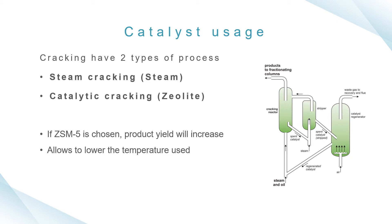The figure shown is a catalytic cracking process description, in which a catalyst allows lower reaction temperatures to be used. If ZSM-5, which is a zeolite type, is chosen, the product yield will increase. The temperature, residence times, and catalyst determine the product proportions. After cracking, the catalyst is separated from the products and regenerated by burning off deposited carbon in air at 900 Kelvin.